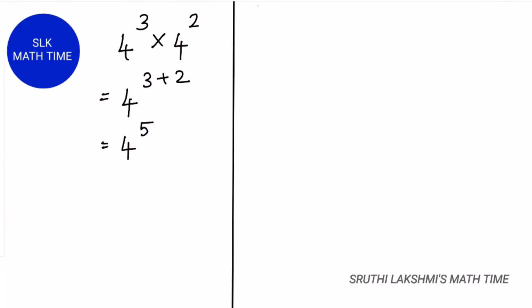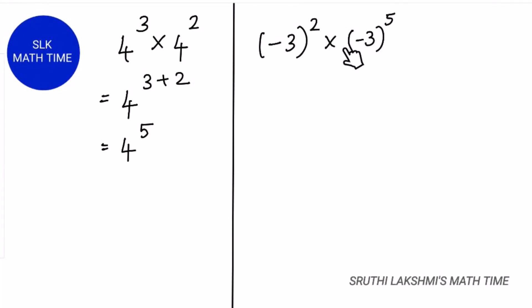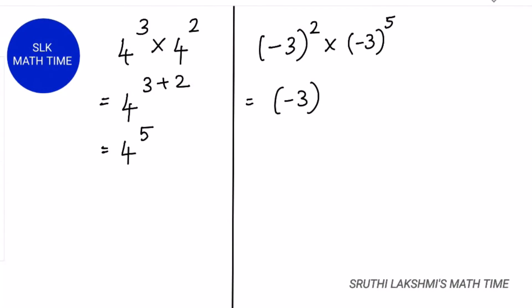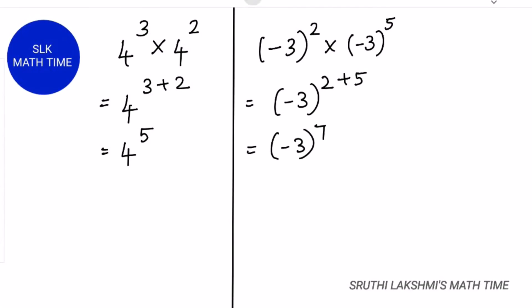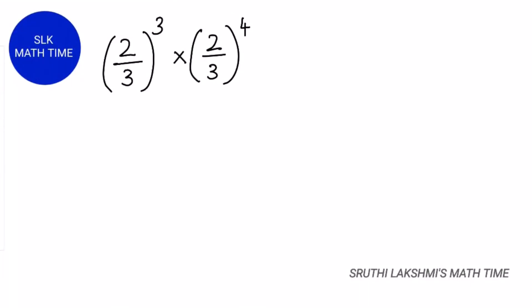Let's see another example: minus 3 the whole power 2, into minus 3 the whole power 5. Here the common base is minus 3, and the exponents are 2 and 5. We add 2 plus 5, which gives us 7. So it's minus 3 the whole power 7.